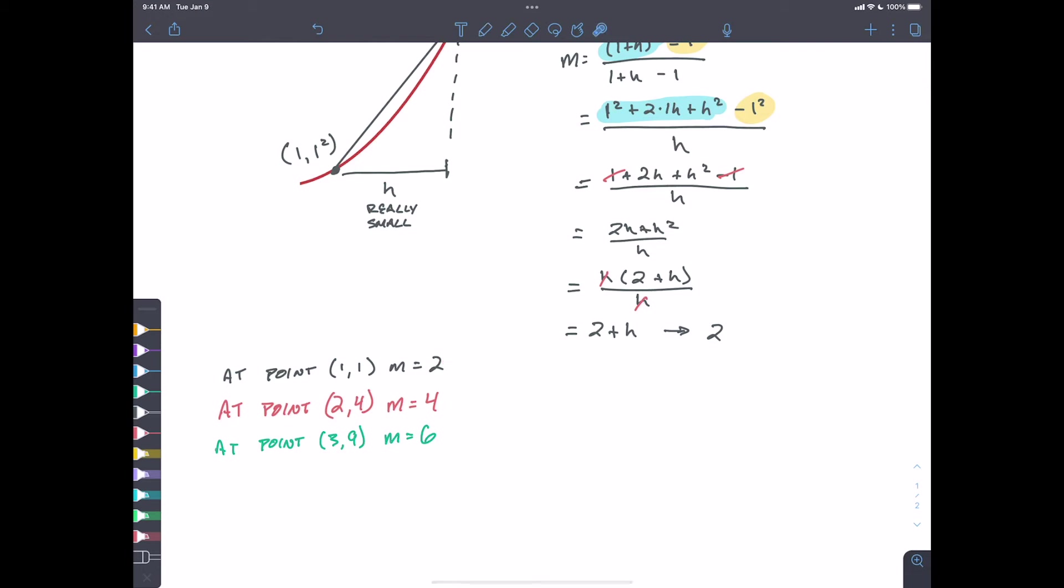So I'm starting to see a little bit of a pattern here, two, four, six. It seems as though if I think back to my sequences and series, and I think about x as my inputs, and this is my output, as I'm kind of finding the slope here.